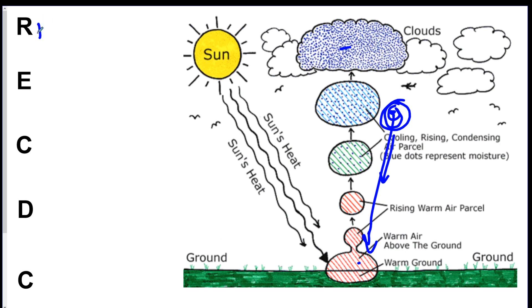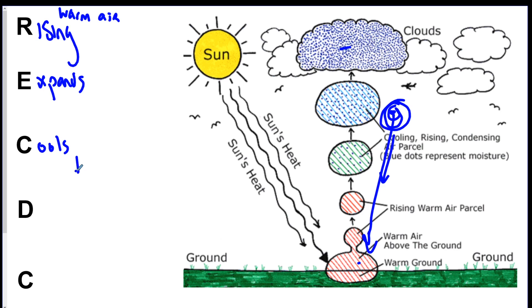So the acronym is: warm air Rises, Expands, Cools to the dew point, and then Condenses.